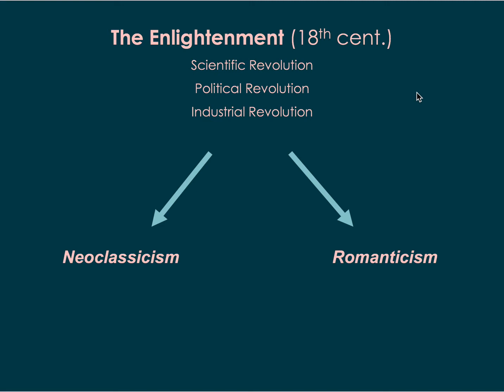What neoclassicism did was look at these revolutions and say we need a new art that will embody the rationality, the science, and the sense of reason that all of these things represented. To do that, they looked back at the classical arts of ancient Greece and ancient Rome, which themselves were based on reason, proportion, and rationality. Neoclassicism became a style that mimicked the classical — hence the term neoclassical. However, there was another group of artists known as the romantics who felt that after all these revolutions and dramatic societal changes, why would they want to be a slave to another style? Romanticism really prioritized the individuality of the artist and the idea of freedom.